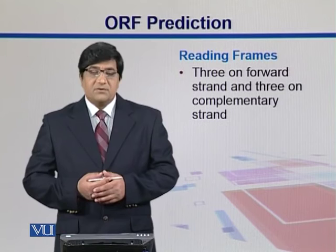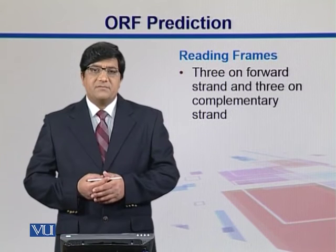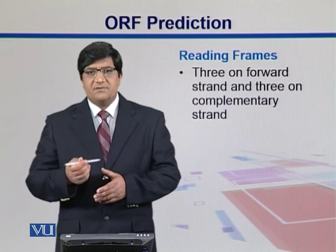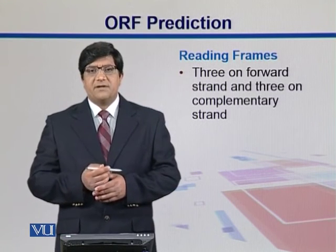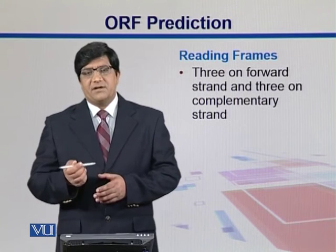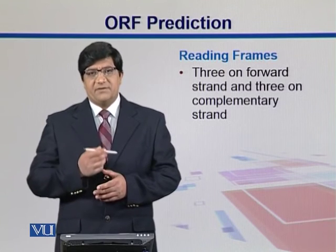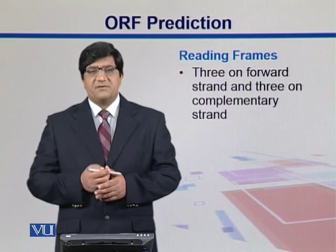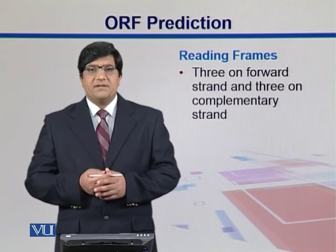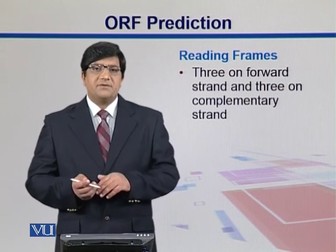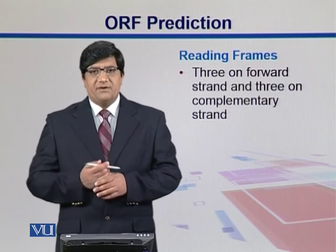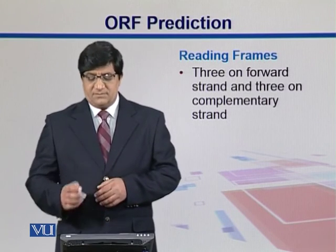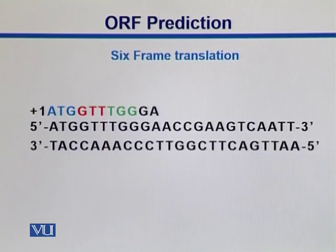Three reading frames are on the forward strand, which runs five prime to three prime. When you write a DNA strand, you write it in the five-to-three direction, so we call it the forward strand. Then there is a complementary strand, which runs three prime to five prime.